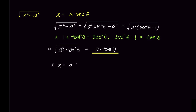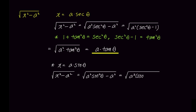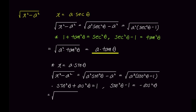What if we substitute x with a sine theta by mistake? You can quickly realize something is wrong. The term inside the square root becomes a squared sine squared theta minus a squared, which simplifies to a squared times sine squared theta minus 1. Since sine squared theta plus cosine squared theta equals 1, sine squared theta minus 1 becomes negative cosine squared theta, meaning we end up with a negative value under the root, which is not possible. Just remember that when there is a minus sign, sine theta or secant theta should be used.